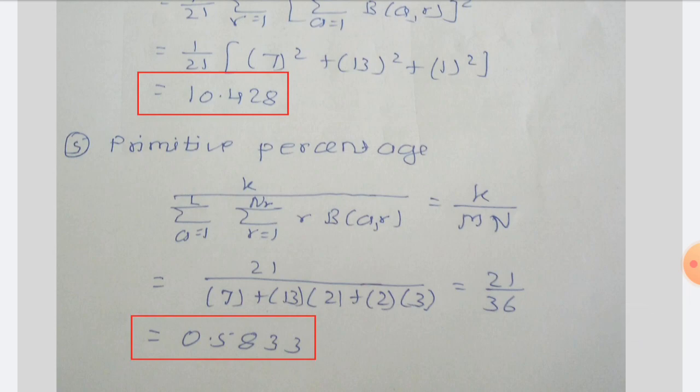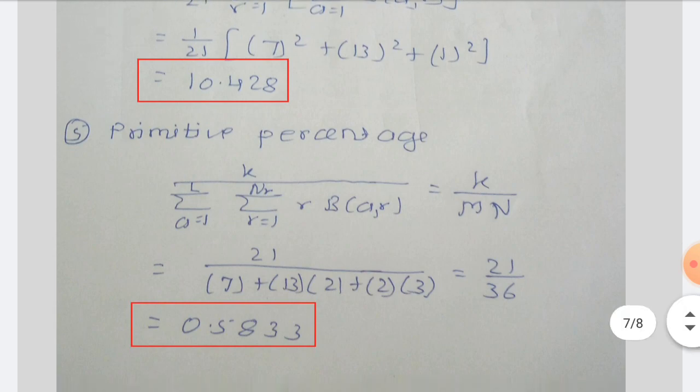The last feature is primitive percentage: K divided by summation over A=1 to L, summation over R=1 to NR of R×B(A,R), which equals K divided by M×N. After putting in the values we get primitive percentage as 0.5833.